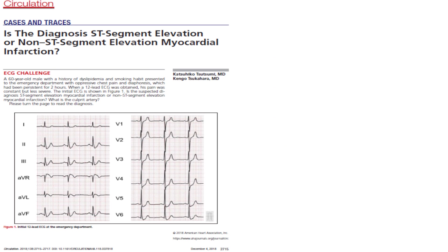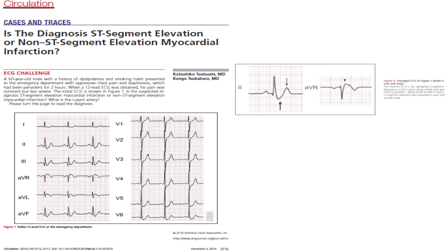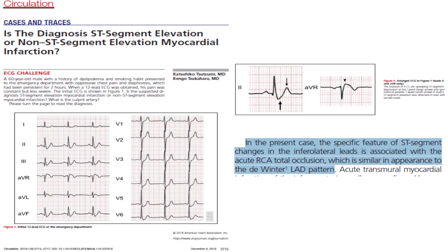One more thing about the De Winter sign: in 2018 a paper reported a De Winter-looking T wave pattern in the inferior leads associated with an RCA occlusion. Remember that the De Winter sign was originally described only in anterior leads V1 to V6 associated with LAD occlusion — this was the first reported occurrence of the De Winter pattern in the inferior leads.